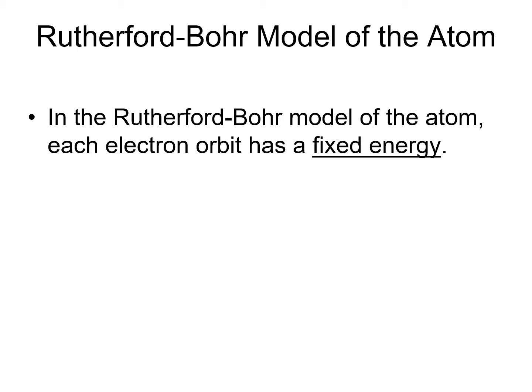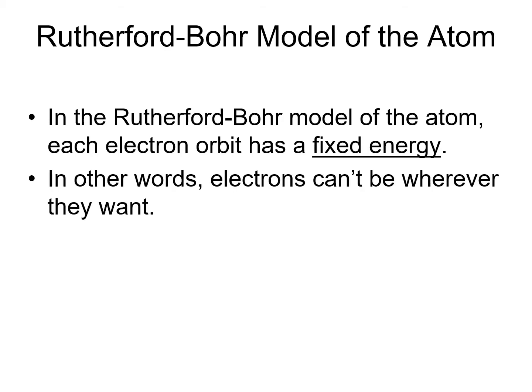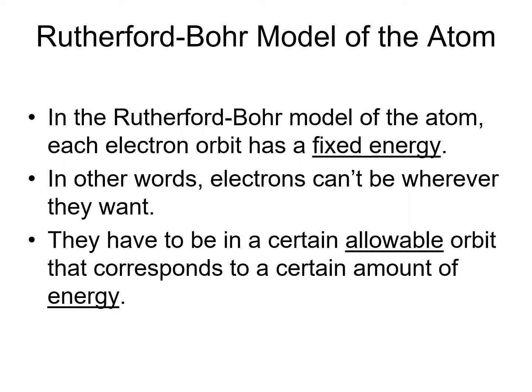And in this model, the electrons orbiting outside the nucleus each have a certain amount of energy. In other words, electrons can't be wherever they want to be. They are where they are. They are orbiting where they are orbiting because of the amount of energy that they contain. So, there's only certain allowable orbits that correspond to certain amounts of energy for any given atom.